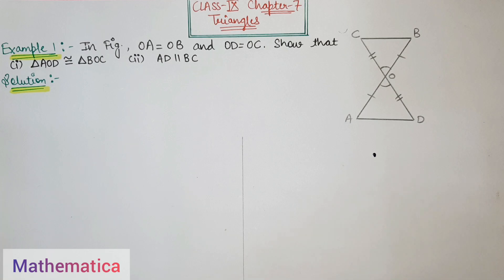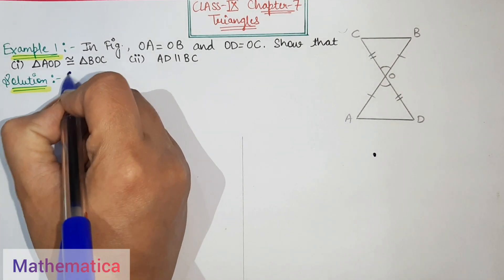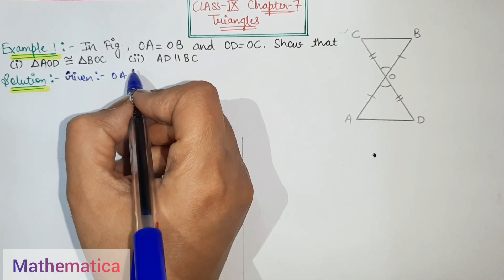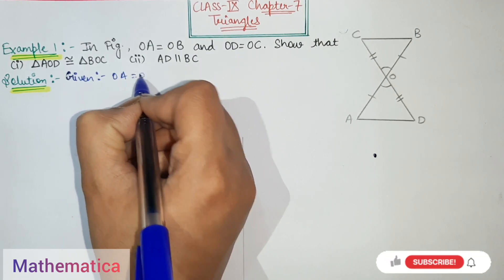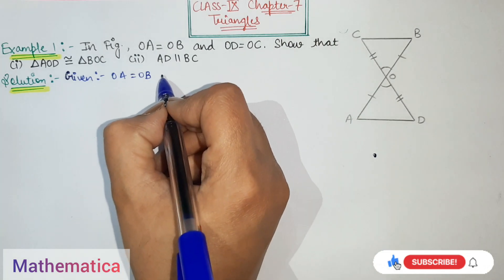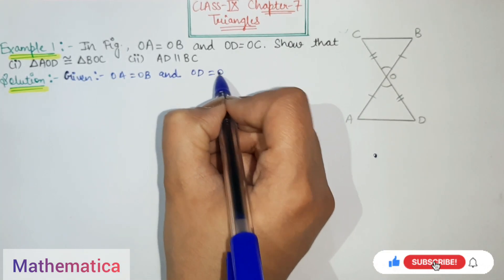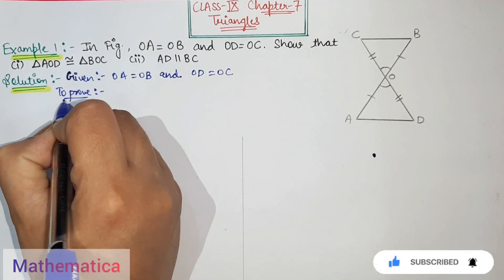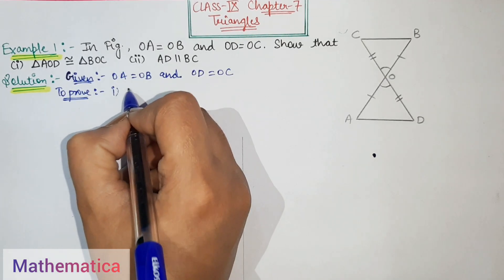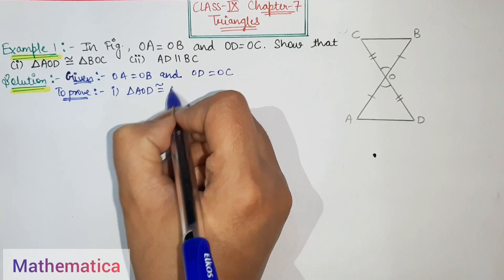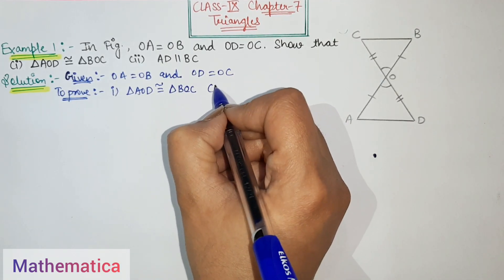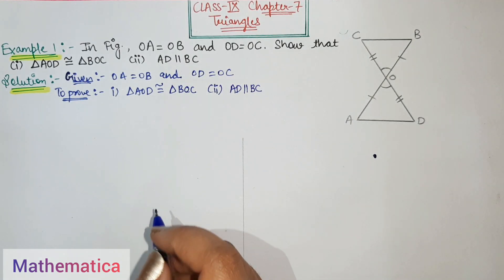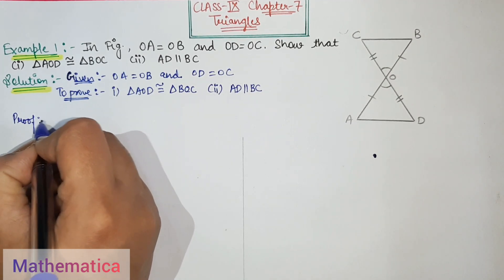Now we will write what is given. Given: OA equals OB, and OD equals OC. To prove: first part — triangle AOD is congruent to triangle BOC; secondly — AD is parallel to BC. So we will write the first part of the proof.